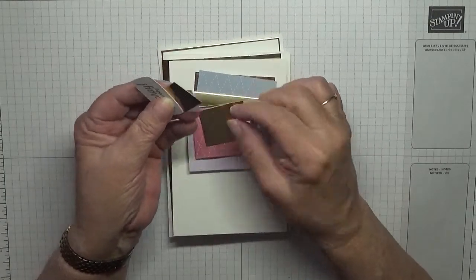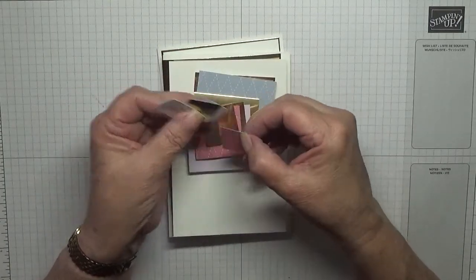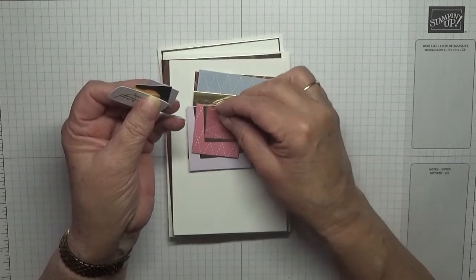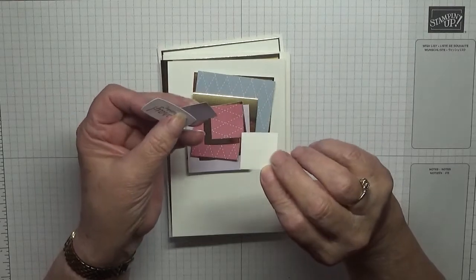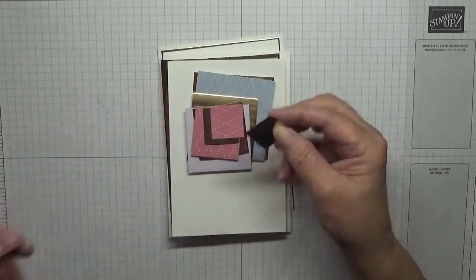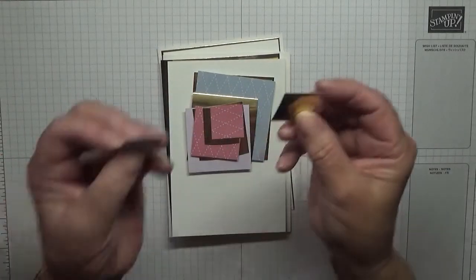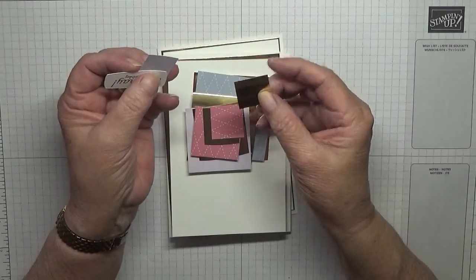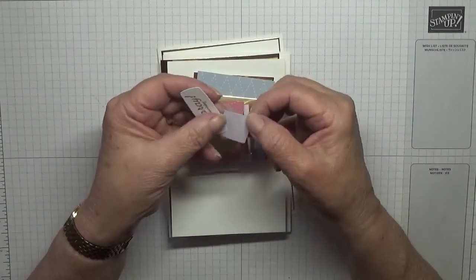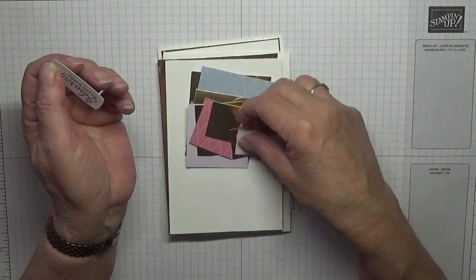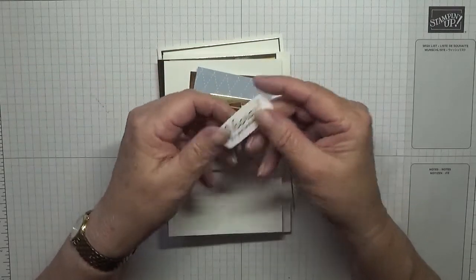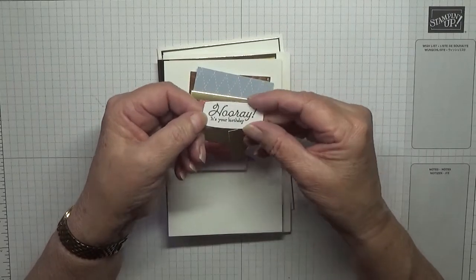So I have a bit of DSP at one and a half by one and a half. Then another piece that's one and one eighths by one and a half, and a piece of DSP by one by one. My last piece is one inch by one inch square with DSP at seven eighths by seven eighths, and then the sentiment which says hooray it's your birthday.